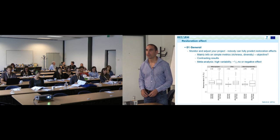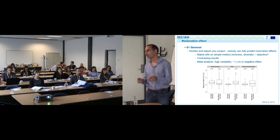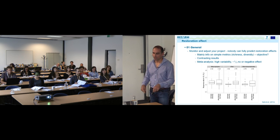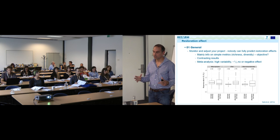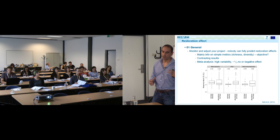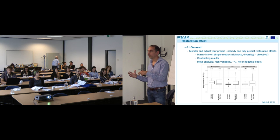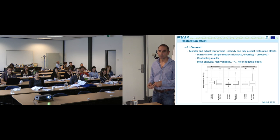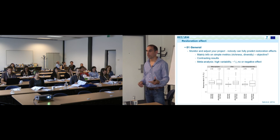Ecosystem functions and services don't necessarily align — you can increase diversity but produce something that doesn't look very nice. I think that's a fact. That's why we should think in a holistic approach about the total effect of a restoration project: the increase in diversity, the effect on different functions and services. It might be better to restore something not aesthetically pleasing if you give more value to biodiversity compared to a project prioritizing recreation.